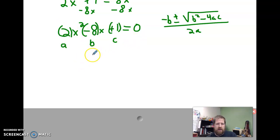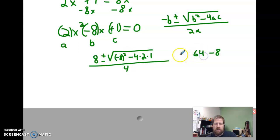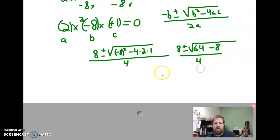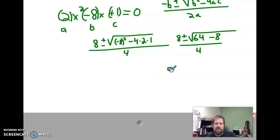So, I've got negative, negative 8, or positive 8, for my negative b plus or minus the square root of negative 8 squared minus 4 times 2 times 1 all over 2a or, you know what, I'm just going to simplify it right now, 4. Simplify what's underneath. Negative 4 times 2 times 1 is going to be negative 8. Negative 8 squared is going to be 64. So, I've got 8 plus or minus the square root of 64 minus 8 over 4. And 64 minus 8 is 56.